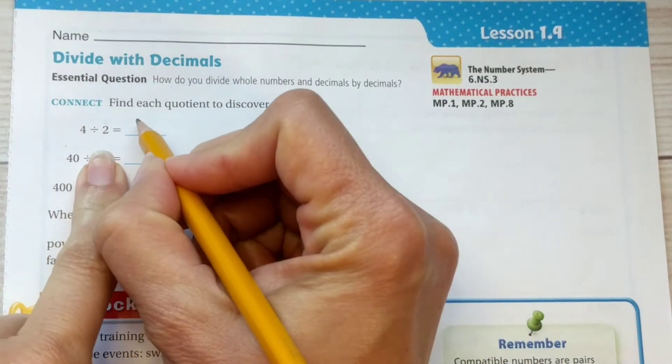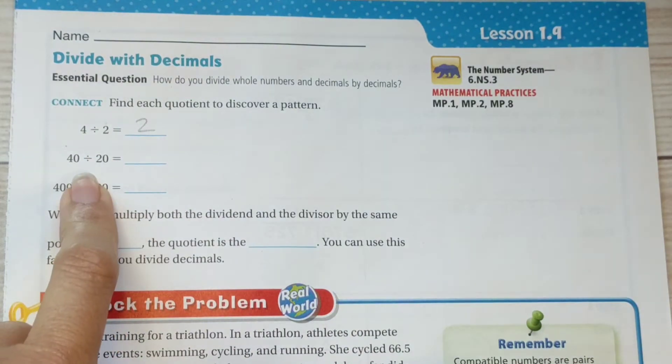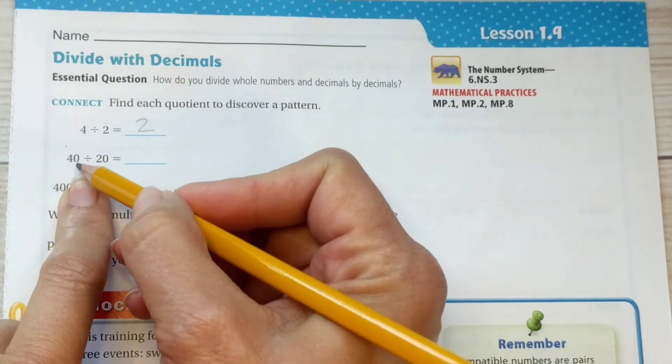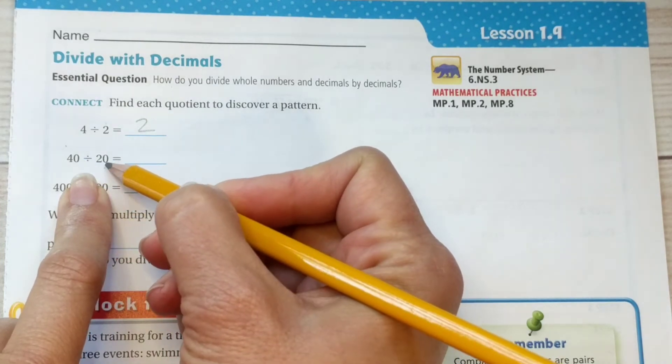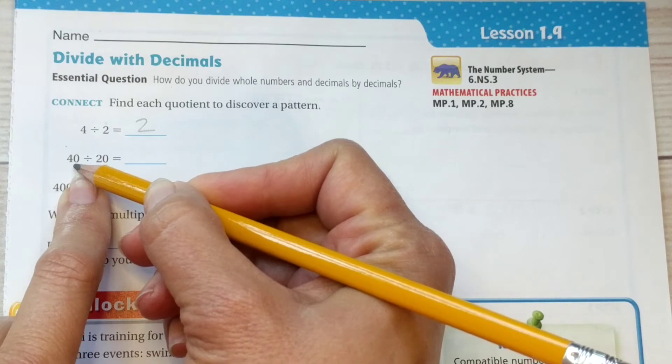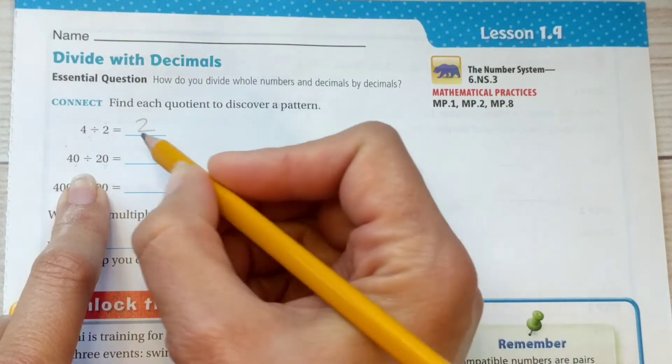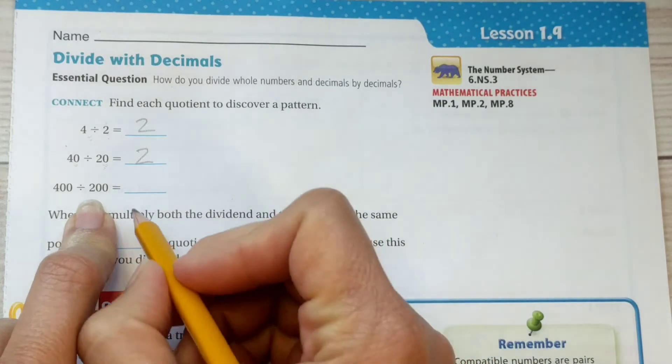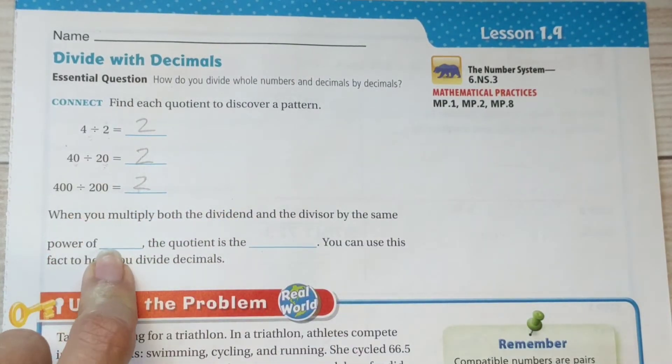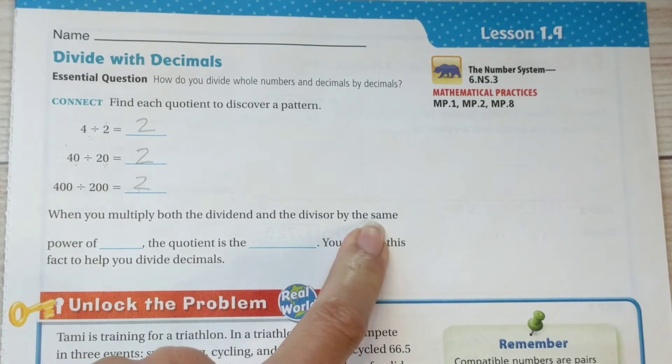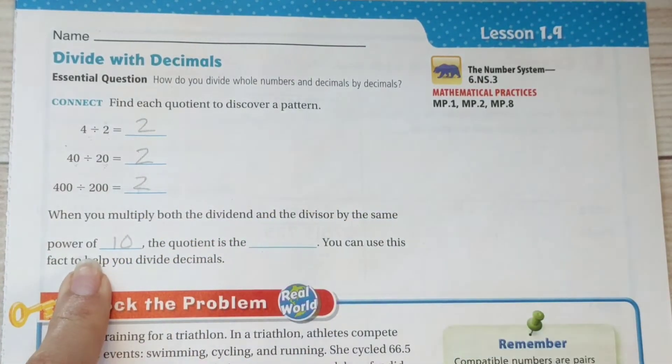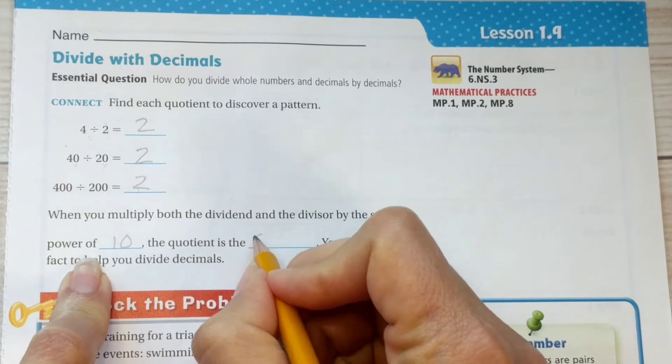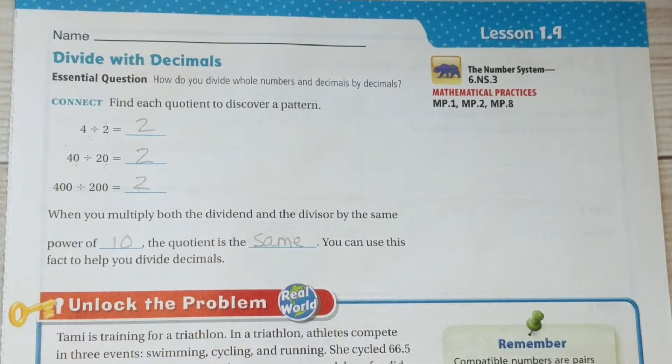Find each quotient to discover a pattern. 4 divided by 2 is 2. 40 divided by 20, notice that they have the same number of zeros behind in the divisor and the dividend. 40 divided by 20 is also 2. 400 divided by 200 is 2. When you multiply both the dividend and the divisor by the same power of 10, the quotient is the same. You can use this fact to help you divide decimals.